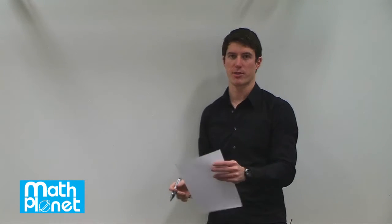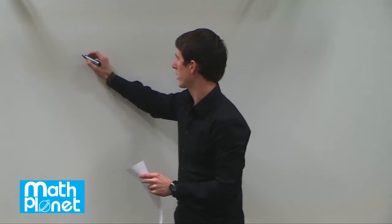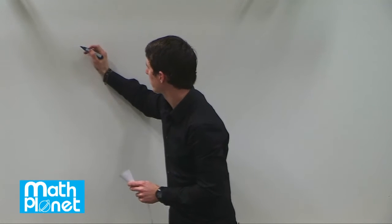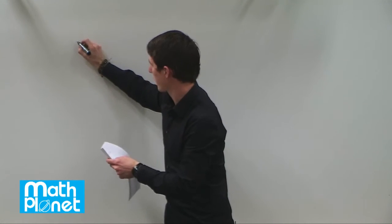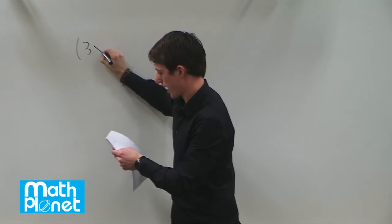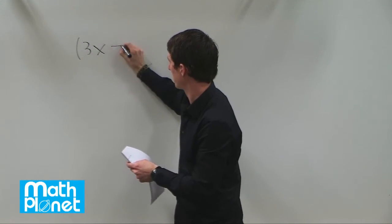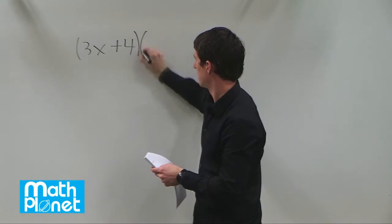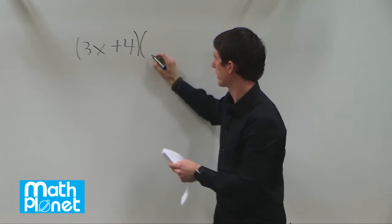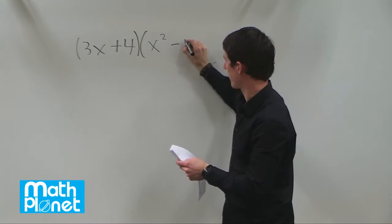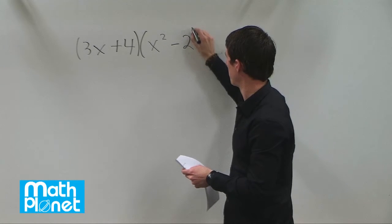Let's simplify or expand the following product of algebraic functions. We have the quantity 3x plus 4 times the quantity x squared minus 2.